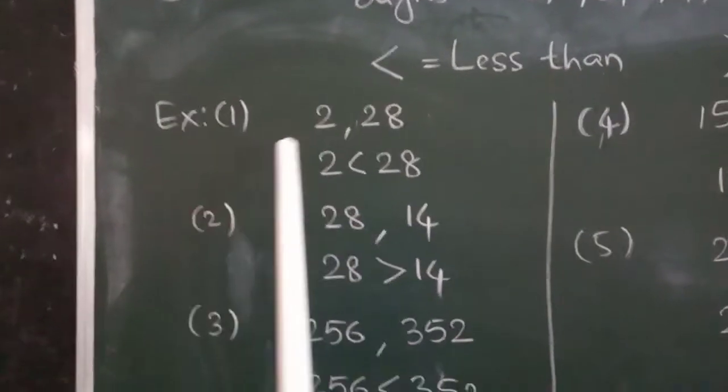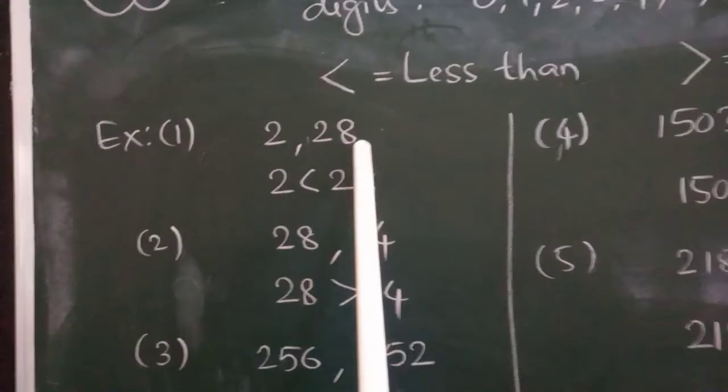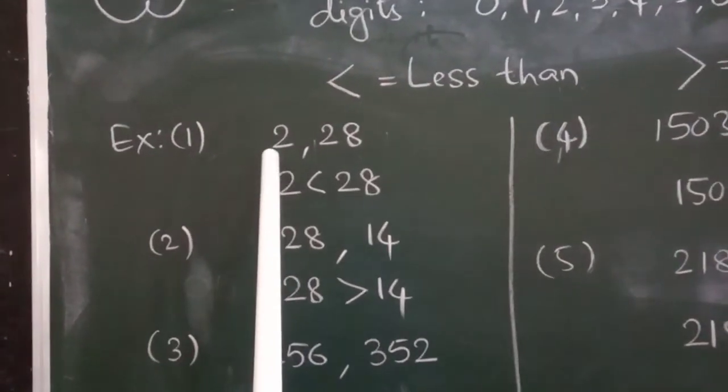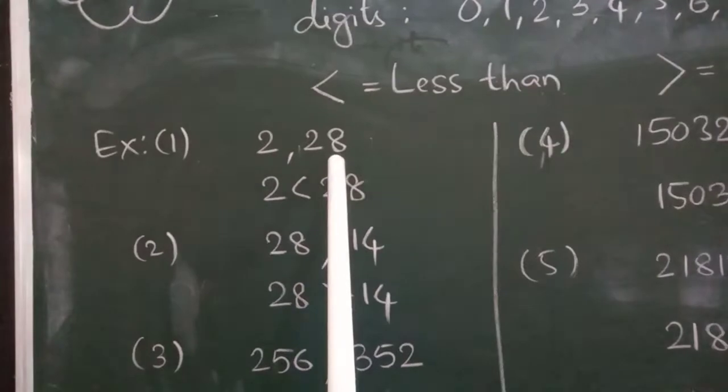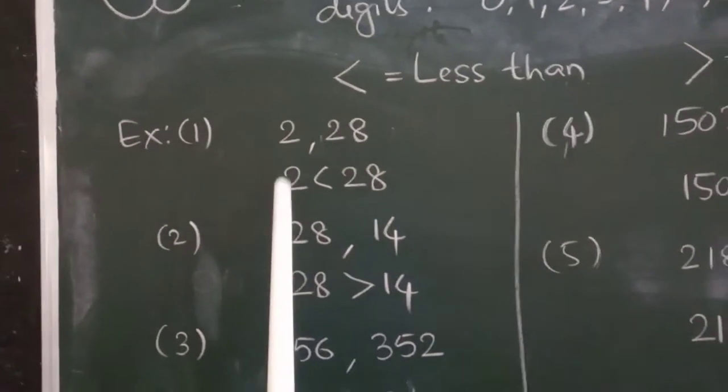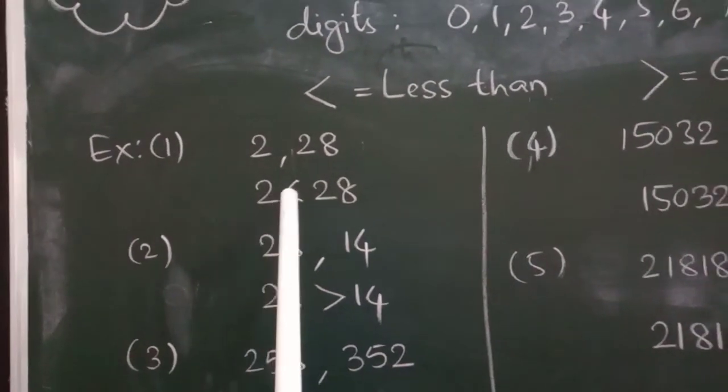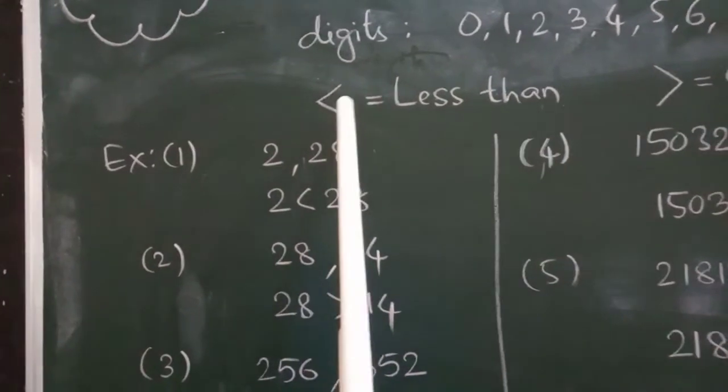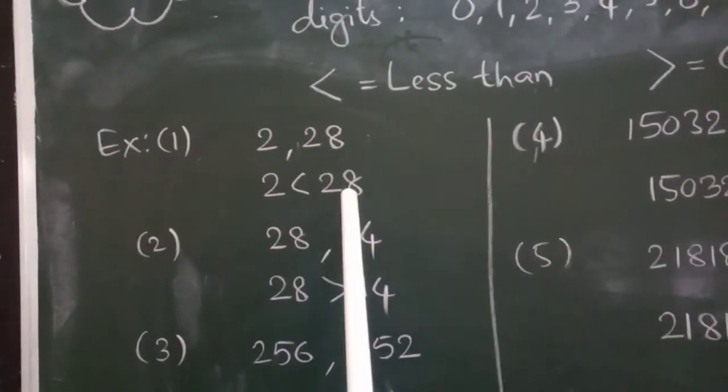Example 1. I will take 2 and 28. So, you know very well, 2 is a single digit number. 28 is a 2-digit number. So, 2 is smaller. I will take this symbol. So, 2 is less than 28.